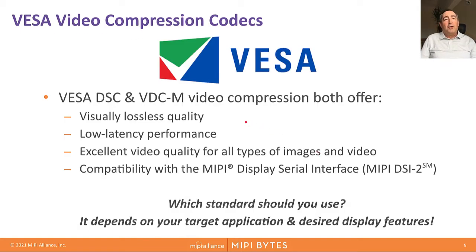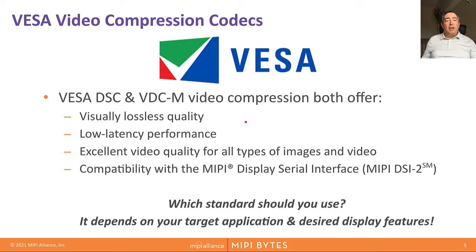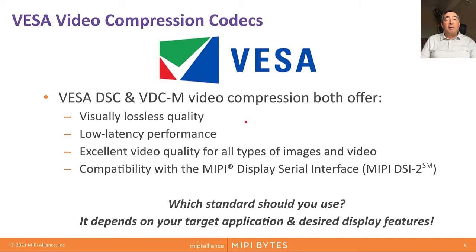The VESA DSC and VDCM compression codecs have a lot in common. First, they are both visually lossless codecs, meaning the end user cannot distinguish between the uncompressed original images and the compressed version. This has been proven through a series of rigorous tests conducted by VESA. Secondly, they have both been designed to have very low latency in the order of a microsecond, which is key in several market areas. Finally, the algorithms have been carefully designed to yield excellent picture quality for all types of content: natural images, text, graphics, and even complex engineering test patterns.